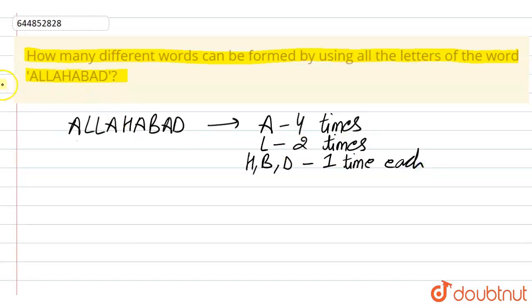We have to permutate all the words that can be possible by using all the letters of the word. We have to find the number of words that can be formed.